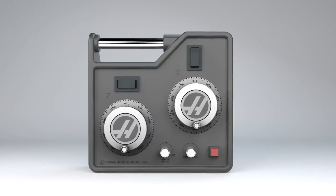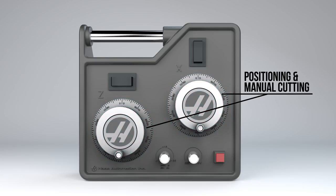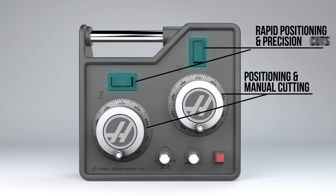Use the Z and X handwheels for positioning and manual cutting, and the jog buttons for rapid positioning as well as precision feed cuts.